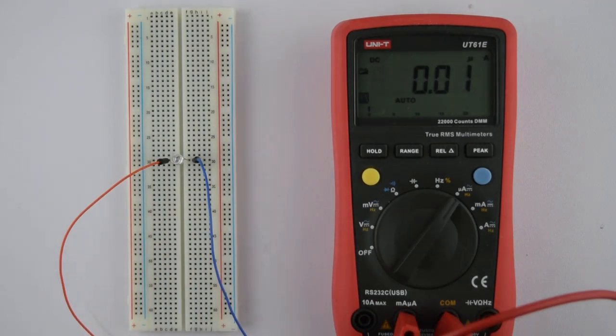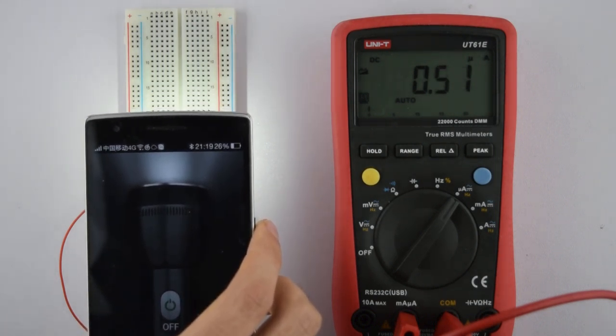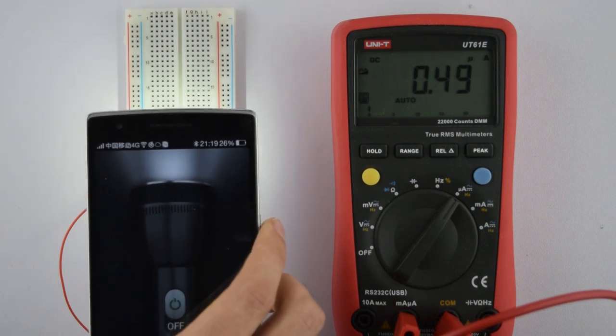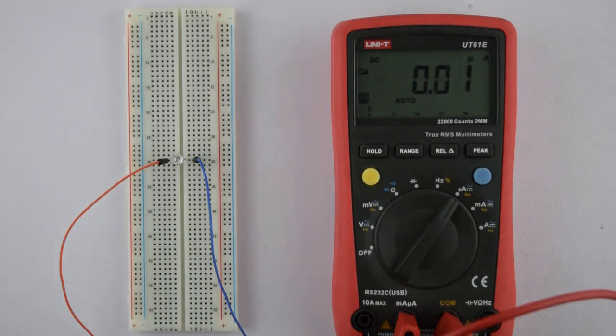If I now measure the current passing through the LED, I see that only a tiny current is passing through it. In this example, only about half a microamp. Clearly, if we're going to use an LED to detect light in a circuit, we'll need to amplify the tiny current which is created.